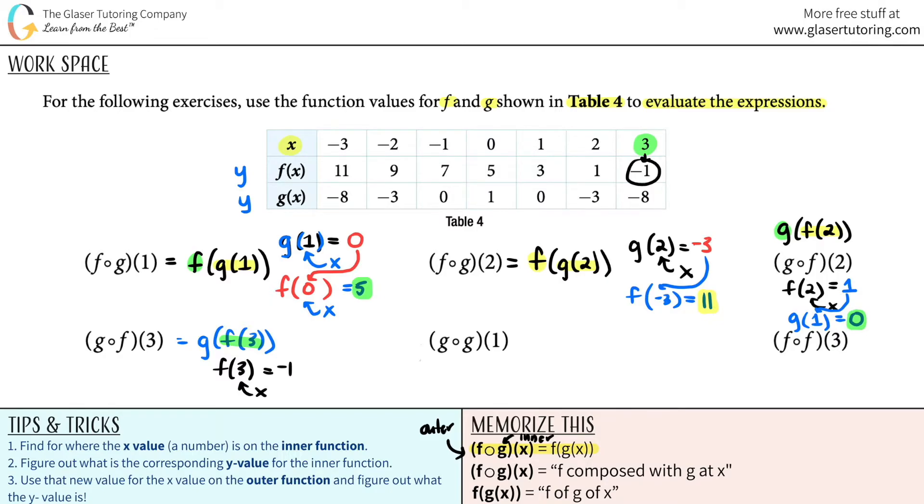Use that number to plug in for the outer function, which was the g function. G of negative 1. Use that answer. That's the new x. Negative 1. You got to go all the way down to the g, which is 0. And that is the answer.